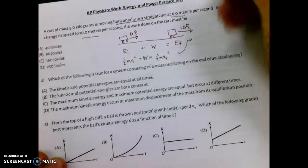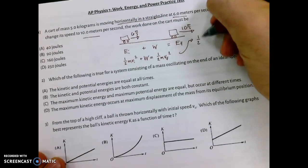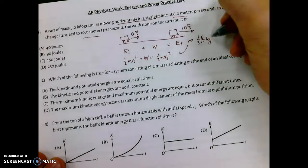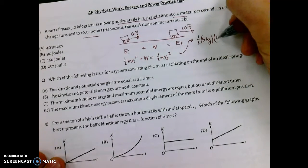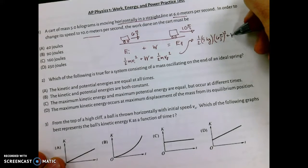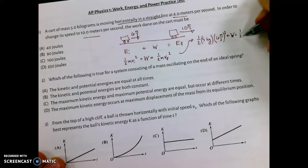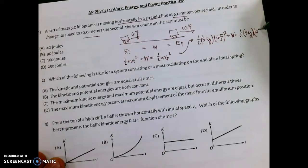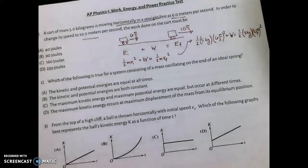This becomes one-half times 5 kilograms times 6 meters per second squared, plus work, equals one-half times 5 kilograms times 10 meters per second squared.